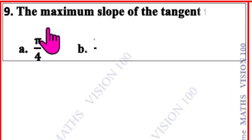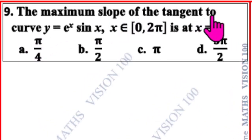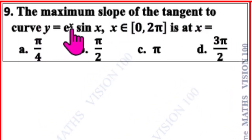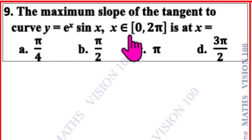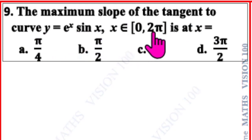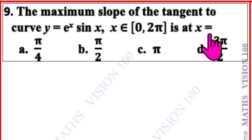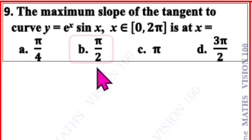Question number 9. The maximum slope of the tangent to the curve y = e^x sin x, x belongs to [0, 2π] is at x equal to — the correct option is B: π/2.